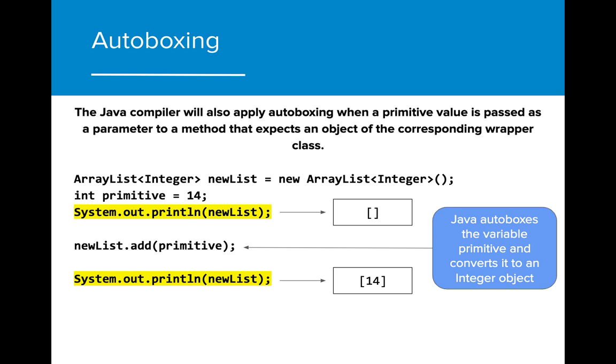When we try adding the primitive variable, we can see that the value of primitive was successfully added to the list. This is because Java automatically converted the value of primitive to the Integer class so that it could be added to the ArrayList.